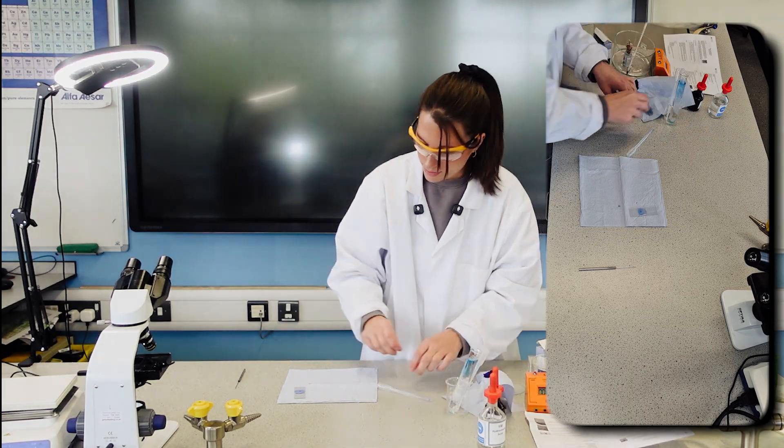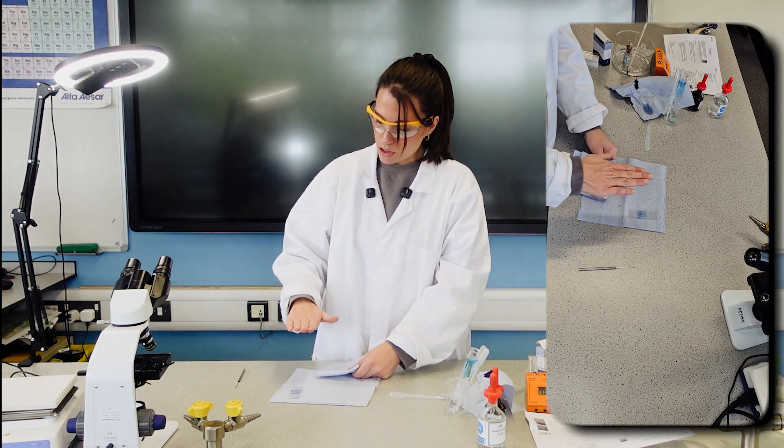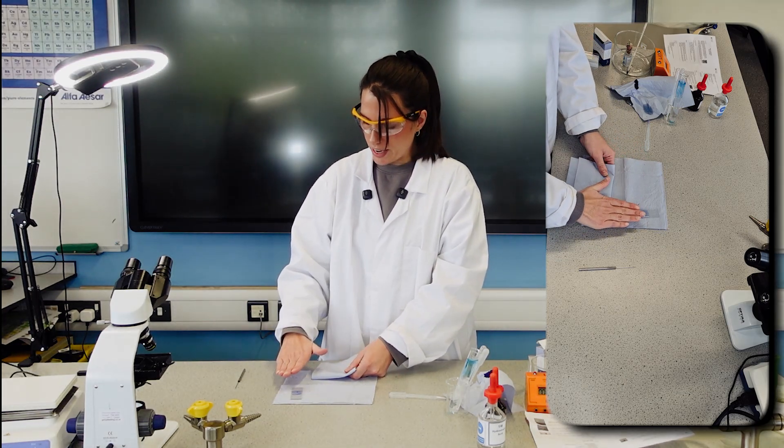Place the cover slip on top. And now this is where we get the squash part. I'm going to put a piece of tissue paper on top.